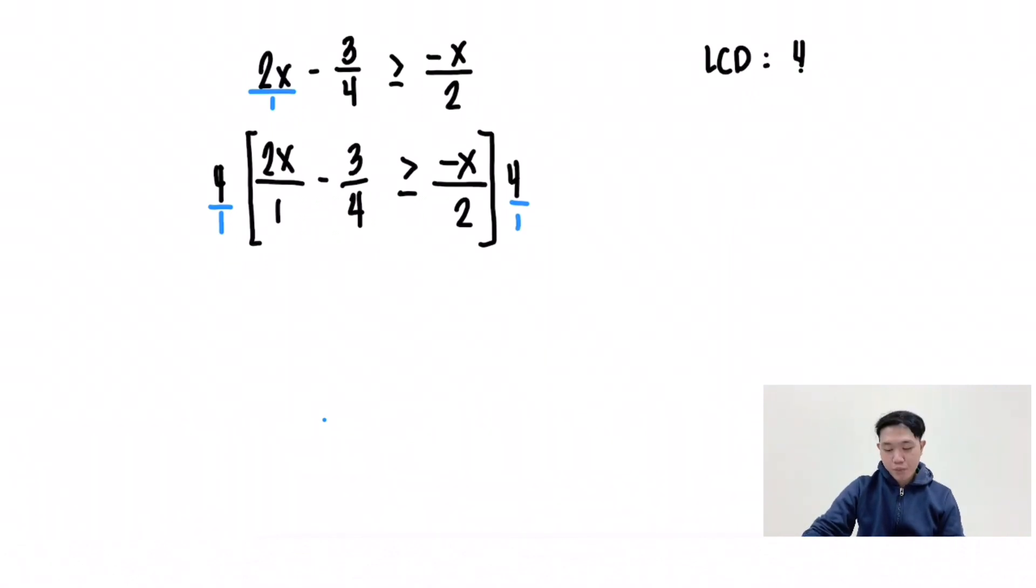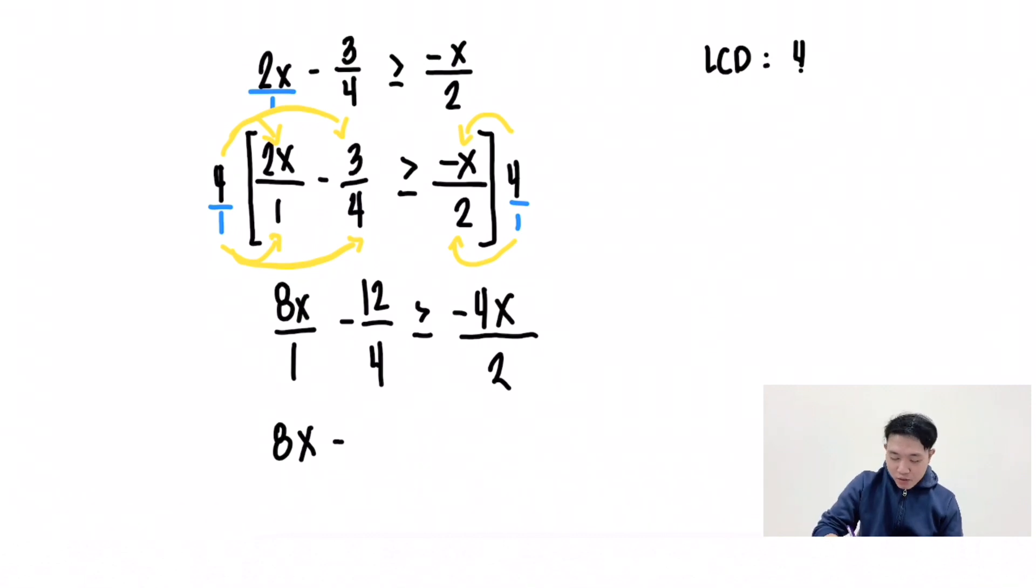The third step is to apply multiplication of fraction. 4 times 2x is 8x, 1 times 1 is 1, minus 4 times 3 is 12, 1 times 4 is 4, greater than or equal to negative x times 4 is negative 4x, 2 times 1 is 2. Then simplify: 8x divided by 1 is 8x minus 12 divided by 4 is 3, greater than or equal to negative 4x divided by 2 is negative 2x.